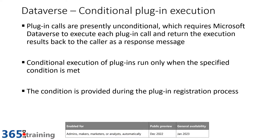Next up is another Dataverse one: conditional plugin executions. Plugins allow pro developers to create custom code that runs on events in the platform — such as creating a record or updating a row. Today when your plugins run, they run unconditionally, so whenever a row is added the plugin logic always executes. With conditional execution, the plugin only runs when a specified condition is met, which you provide at the time you register the plugin. Once released, you'll want to review any plugins in your solution to see if they're eligible for adding conditional execution to optimize performance. This will be in preview in December 2022 and general availability in January of 2023.